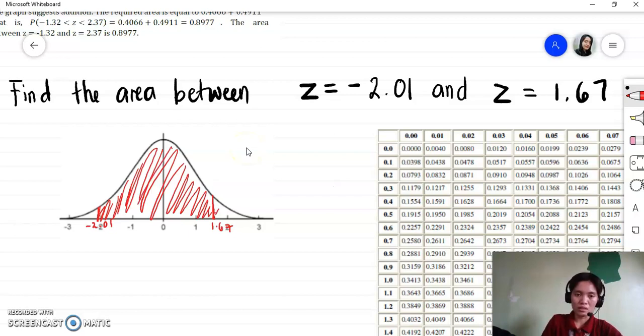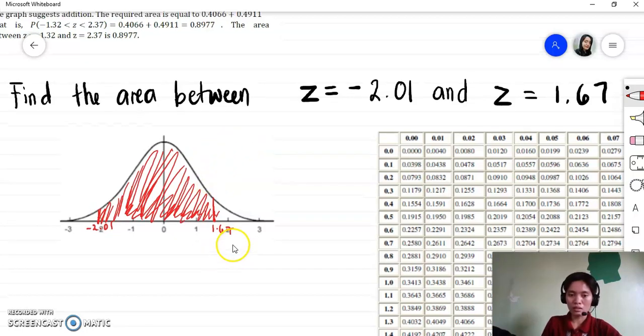What you're looking for is the shaded region. In this case you're going to add, since it is in the middle of your normal curve. You have from 0 to negative 2.01, then from 0 to 1.67. So it is addition of areas.